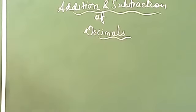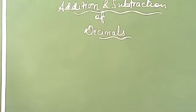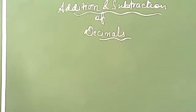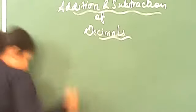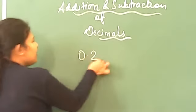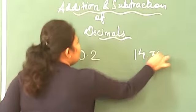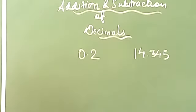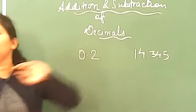Now if you all remember in our last class I have taught you how to convert in like decimal. Do you all remember about it? I have told you, I am just revising it to you. Suppose you have two numbers. One is 0.2, another number is suppose 14.345. There are two numbers.